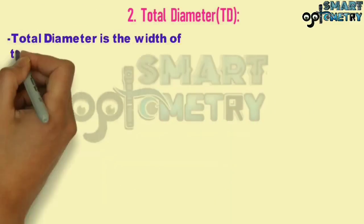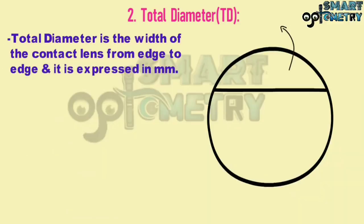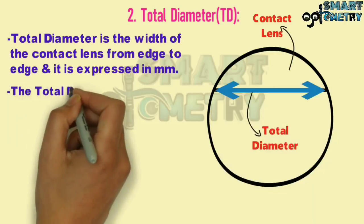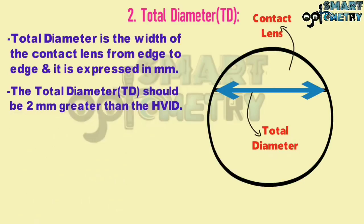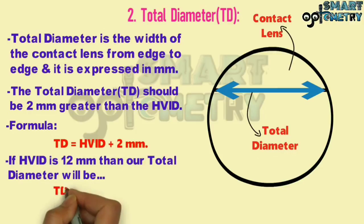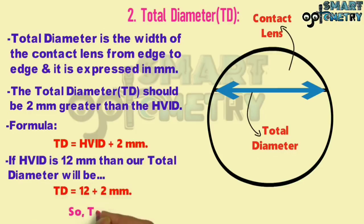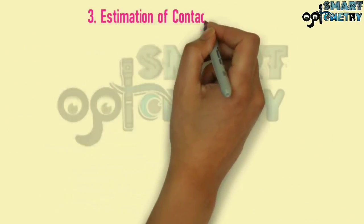Now let's start with total diameter. Total diameter is the width of the contact lens from edge to edge, expressed in millimeters. The total diameter should be 2 mm greater than the horizontal visible iris diameter. The formula is: total diameter equals HVID plus 2 mm. If HVID is 12 mm, then total diameter = 12 + 2 = 14 mm. So the total diameter of this soft contact lens is 14 mm.